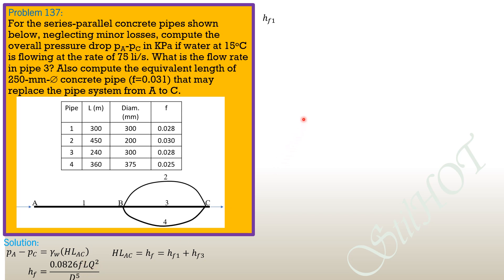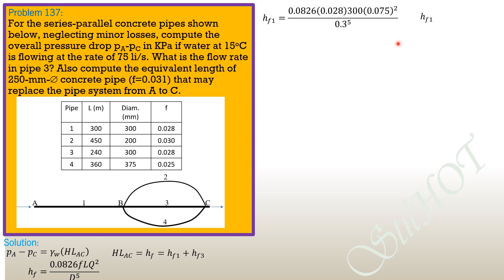HF1 equals 0.0826 times friction factor 0.028 times length 300 times discharge (0.075)² over diameter (0.3)⁵. The discharge in pipe 1 is 75 liters per second. So HF1 equals 1.606 meters.